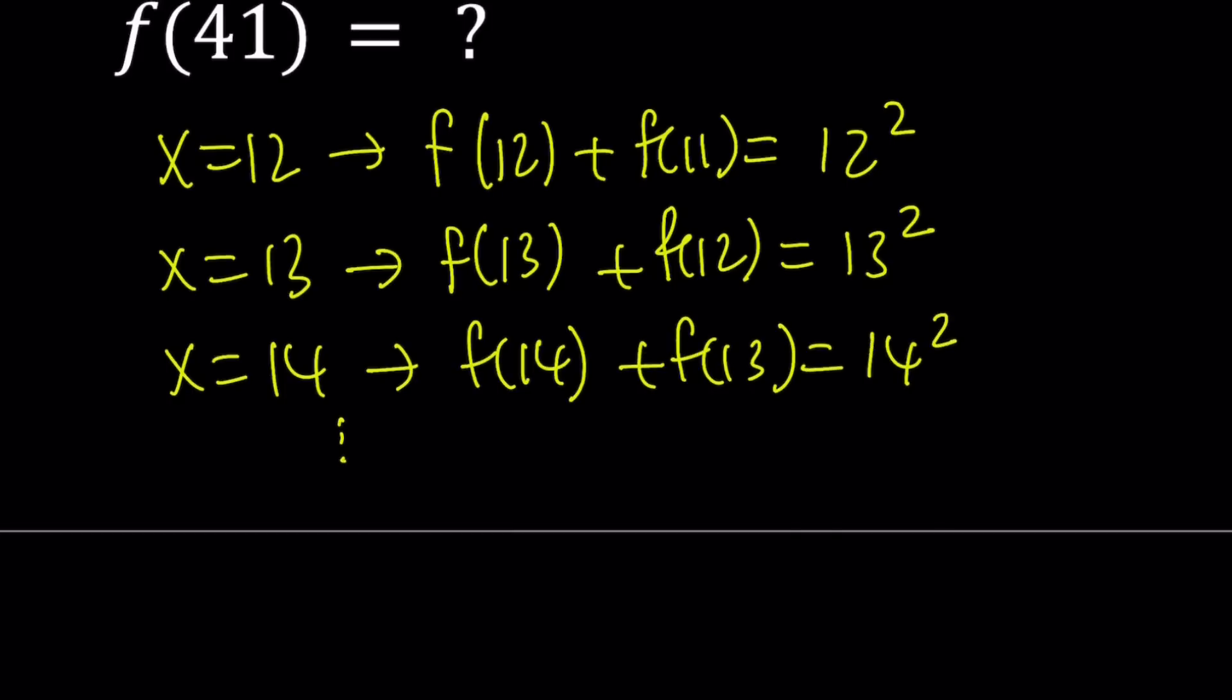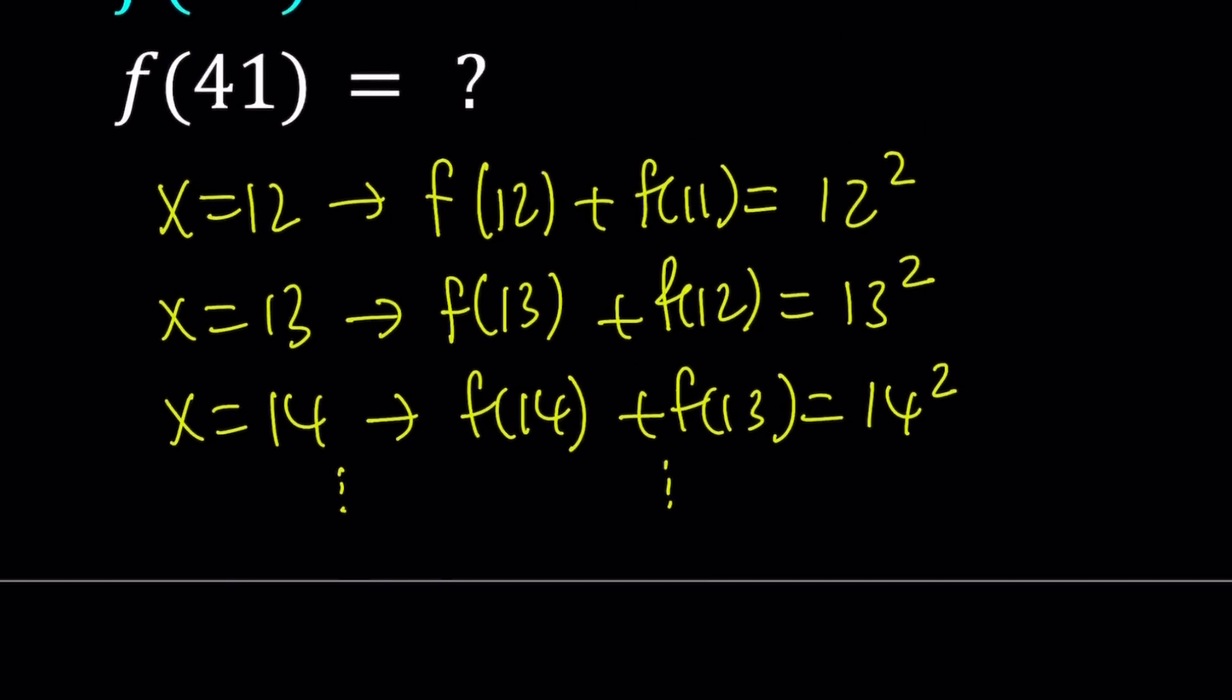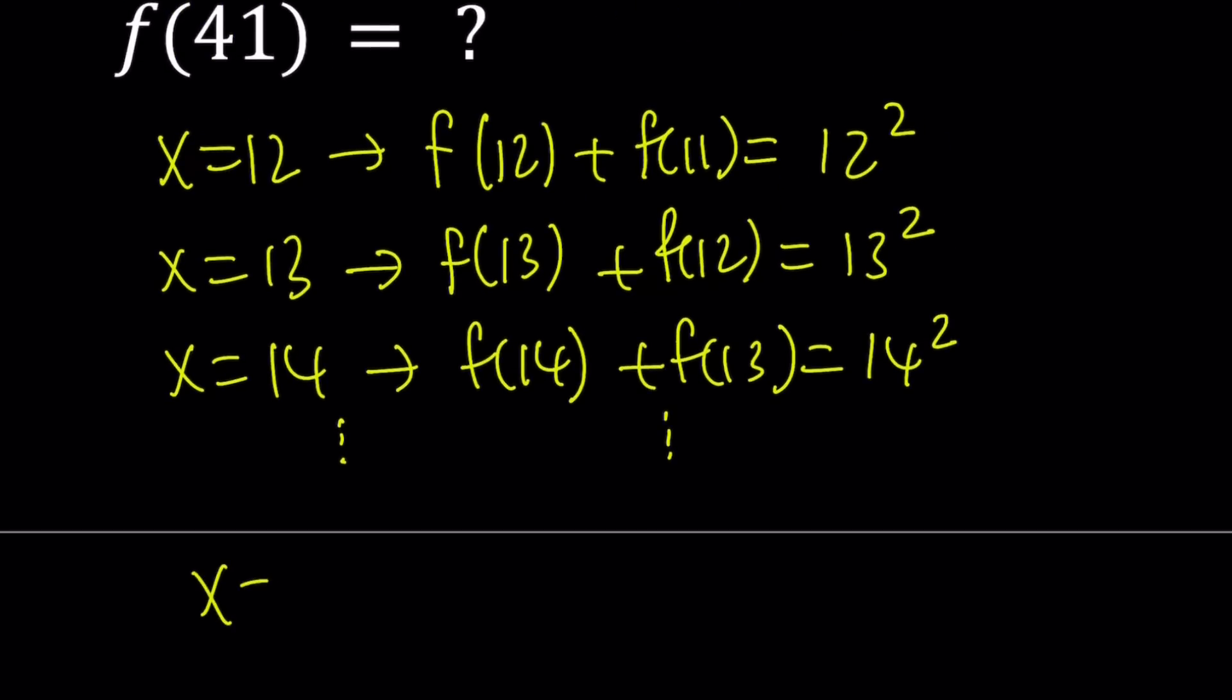You don't really have to evaluate them because we're looking for a pattern, so it's better if you leave them without simplifying. And then I'm going to do the 14, and that's going to give me f of 14 plus f of 13 equals 14 squared. You can keep doing this, but you don't need to. Let's see if we can get a pattern from here. Since I do need f of 41, it makes sense if I replace x with 41 for the last time.